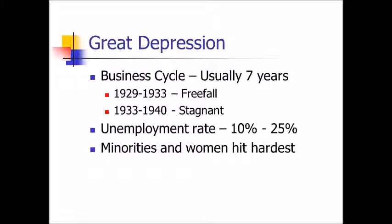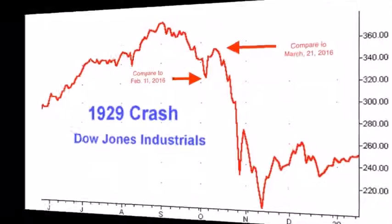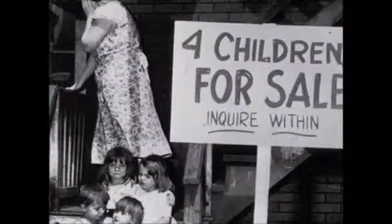This depression starts in 1929 when the stock market has a massive sell-off. People put its end at different times — at least the late 30s, most commonly 1941 with U.S. involvement in World War Two. But we don't really fully come out of it until 1954. It's a long, long depression.